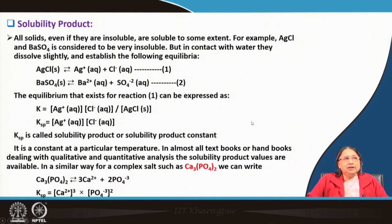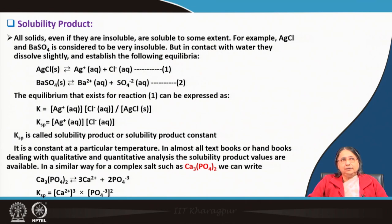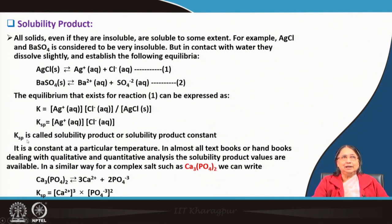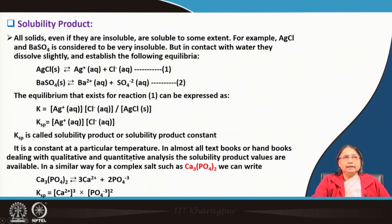We express equilibrium constants in different ways: Ka for acid dissociation, Kb for base dissociation, Kw for water dissociation. Similarly here we write the solubility product as Ksp. This is a very important term for chemical equilibrium, and it is constant at a particular temperature.